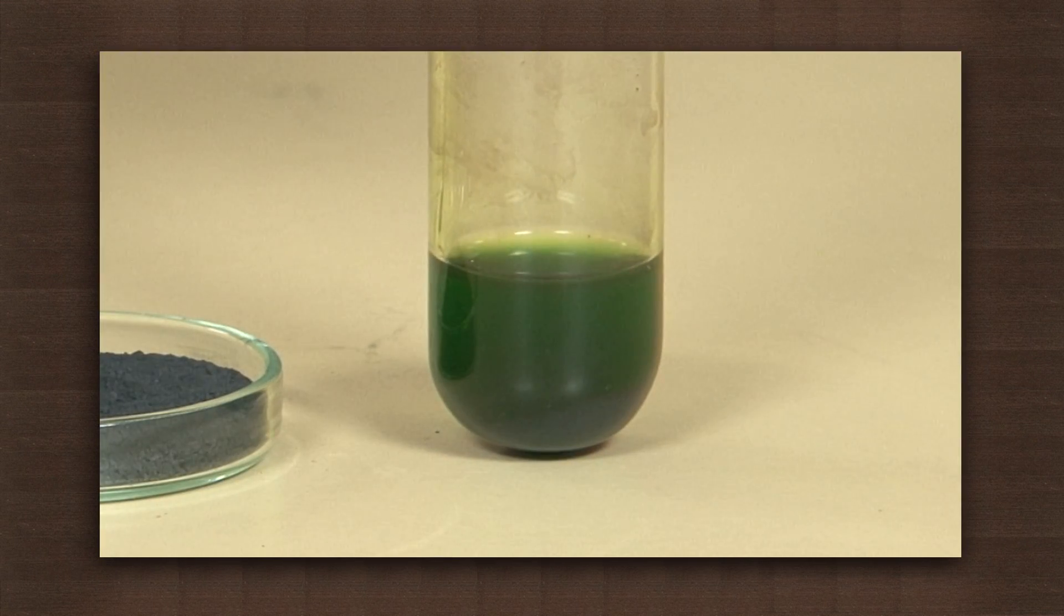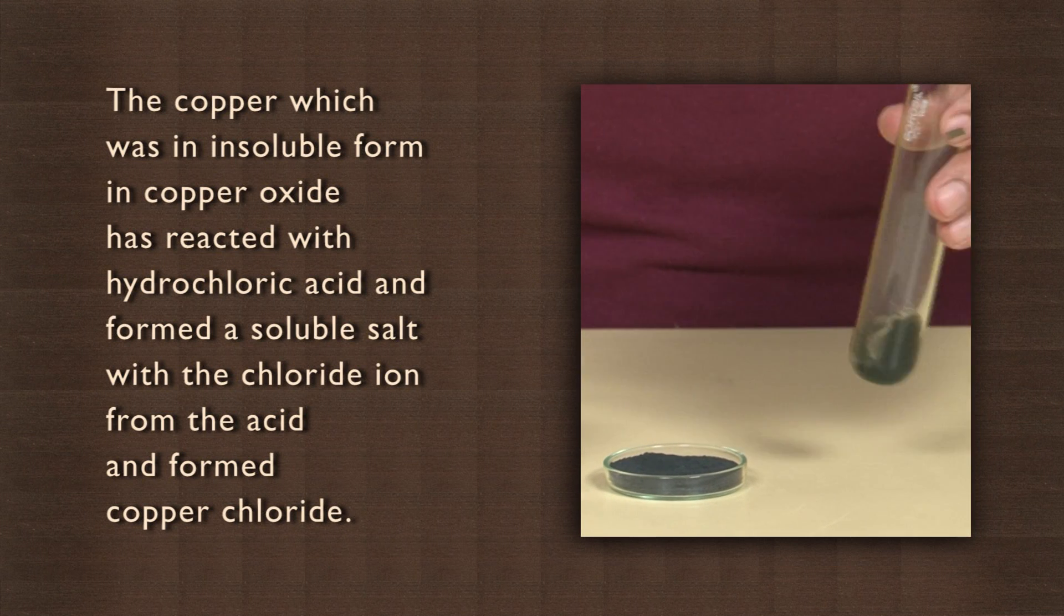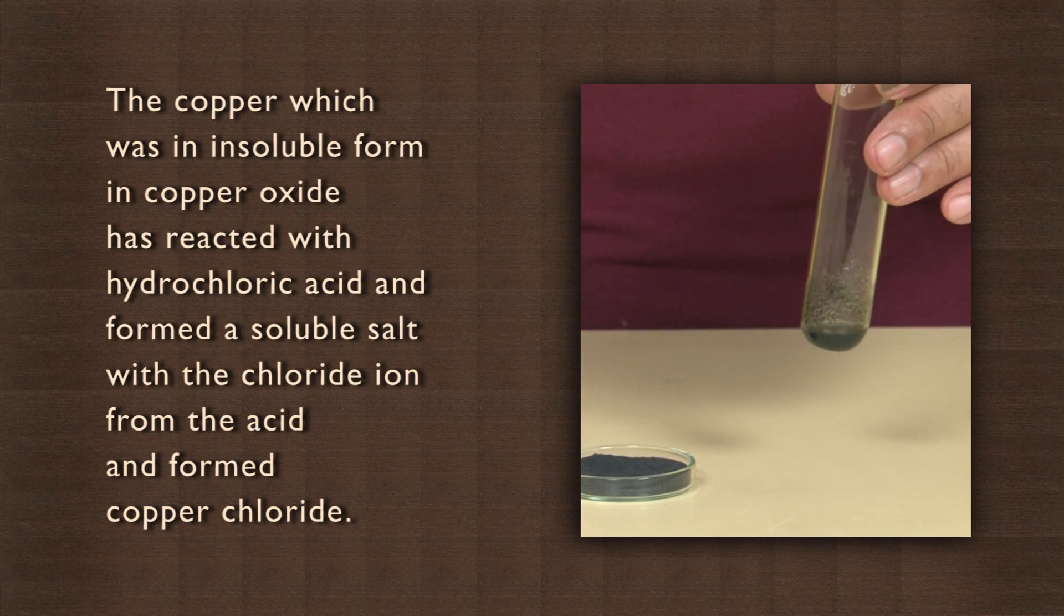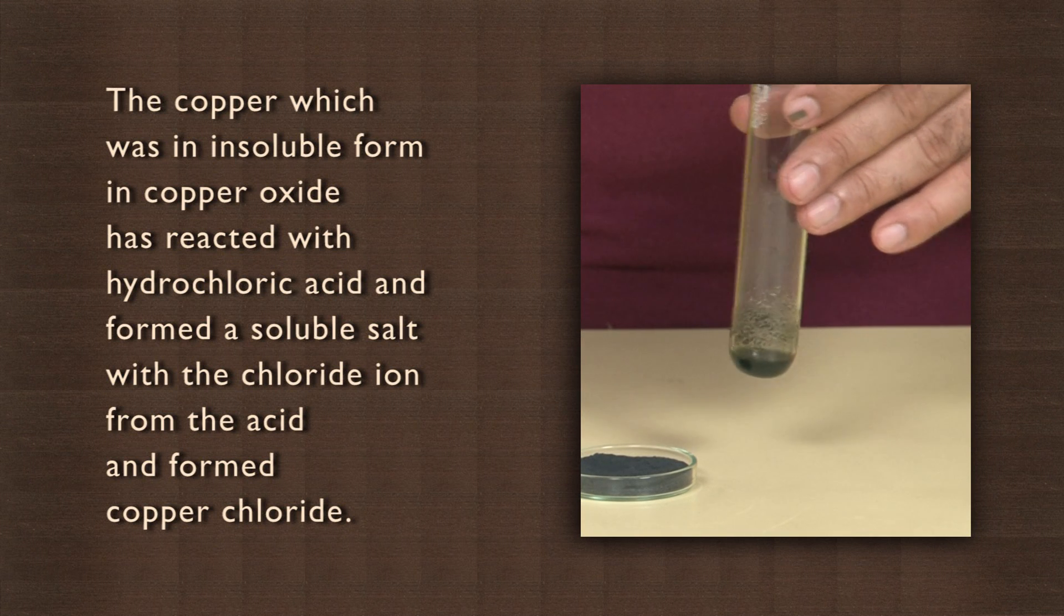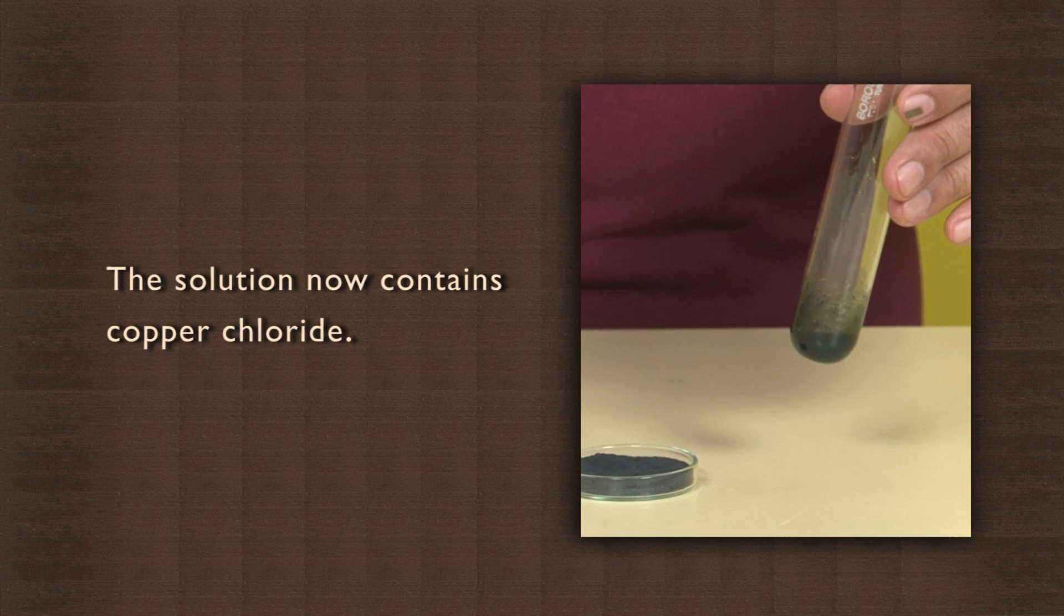You will see the solution has turned green. The copper which was in insoluble form in copper oxide has reacted with hydrochloric acid and formed a soluble salt with the chloride ion from the acid and formed copper chloride. The solution now contains copper chloride.